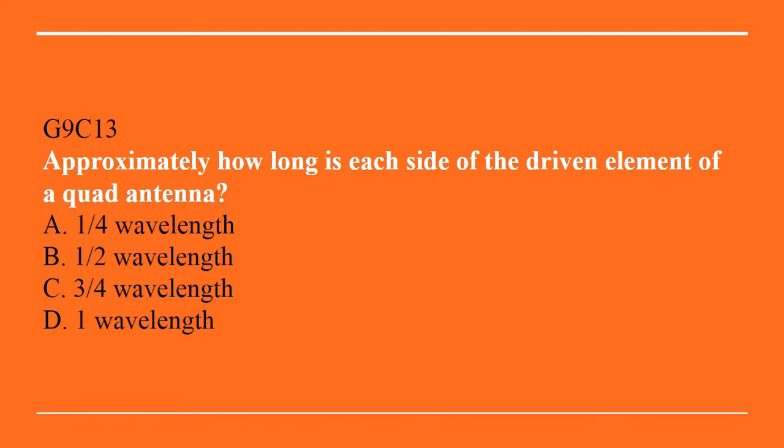G9C13: Approximately how long is each side of the driven element of a quad antenna? A. Quarter-wavelength. B. Half-wavelength. C. Three-quarter-wavelength. Or D. One-wavelength. The answer is A, quarter-wavelength.